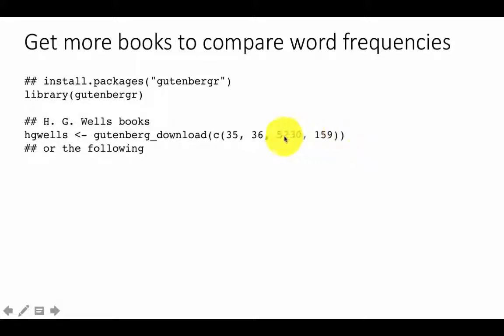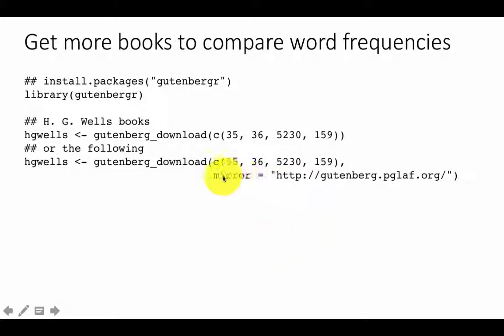So if this command works you're all set. No problem. But if this fails then you may want to explicitly mention the mirror. So for example if I say mirror equals http://gutenberg.pglaf.org. So if you do that then it will go and try to retrieve it from this particular mirror. It's unlikely that you will get an error message from this as well. But if this happens then again Google the gutenbergr project and then find out the names of some of the other mirrors and then try to get it from those mirrors. I'm sure one of these two will succeed.